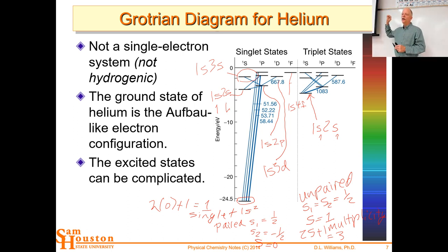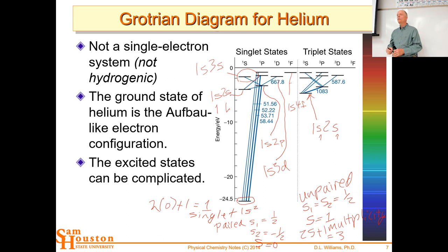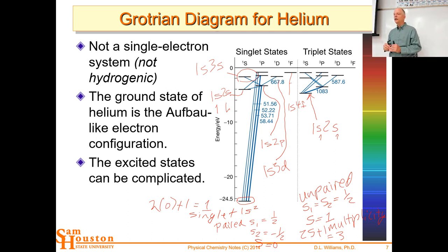This is the Grotrian diagram for helium. Now we can look at it and see if our delta n selection rules hold for a multi-electron atom. Is n still unrestricted? Looking at the p-to-s transitions — 2p, 3p, 4p going down to n=1 — yes, it looks like n is still unrestricted. What about delta L? The atoms have s, p, d character, and we're only seeing drops from s to p or p to s, d to p. Delta L appears still restricted to plus or minus one.